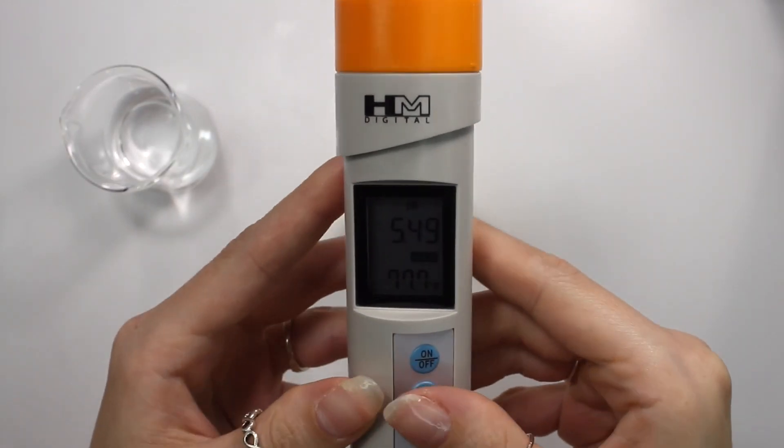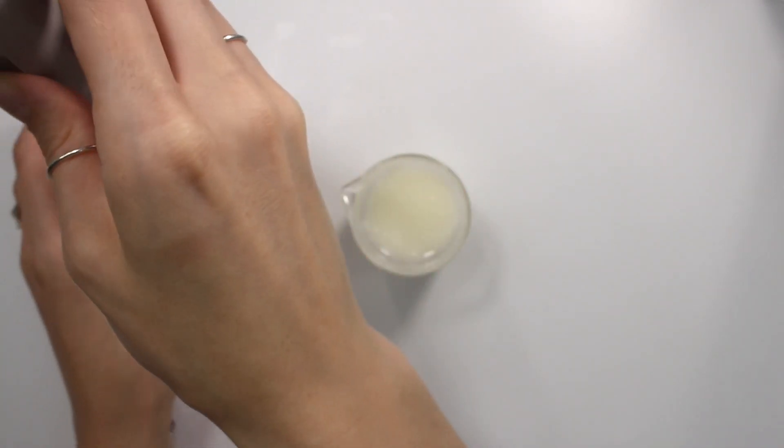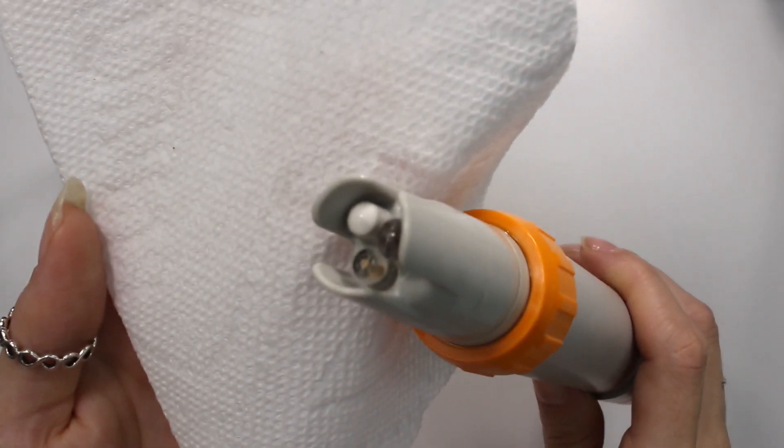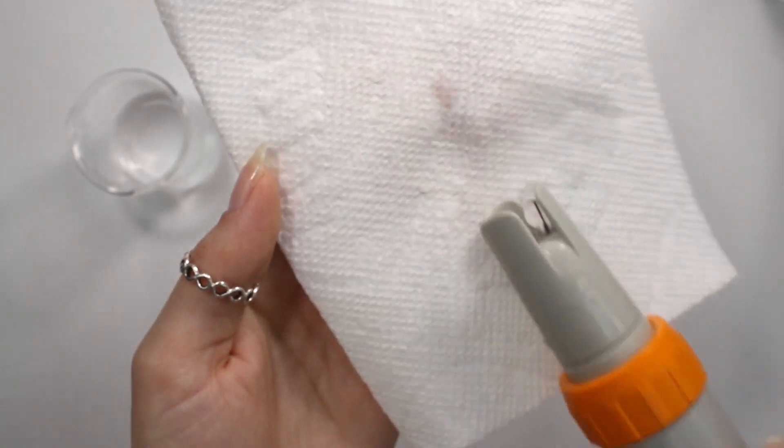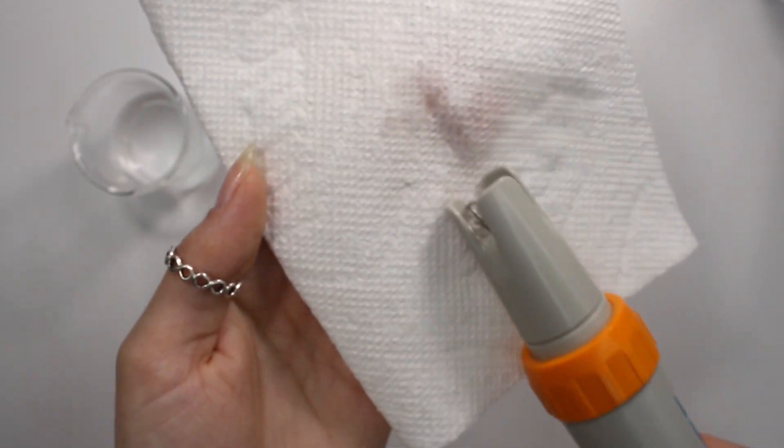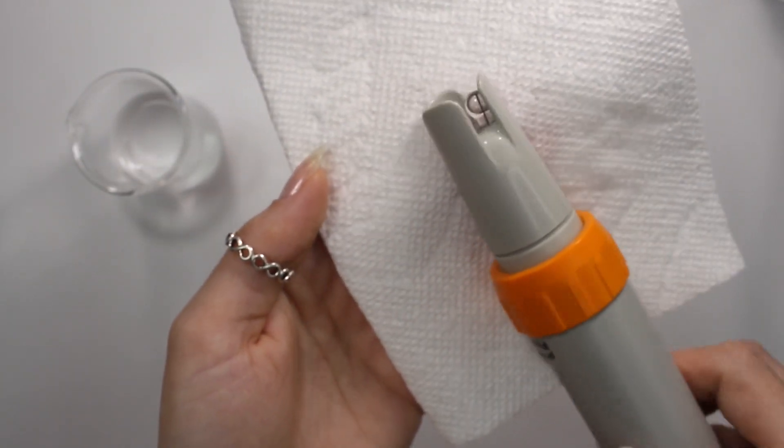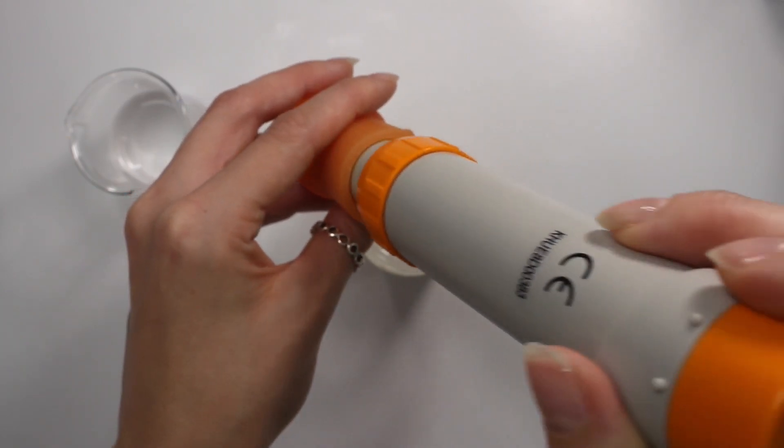And after about a minute, this is reading a pH of 5.49. So then you just want to rinse it off in your distilled water again, and then just gently dry it with a paper towel and be sure not to touch the glass electrode like I mentioned before because you can damage it or scratch it and it can completely mess up the pH meter. So then afterwards you just want to recap it and set it to the side.